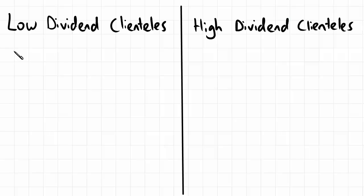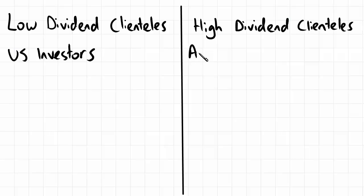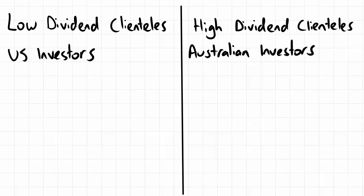On the left side, you would expect to see US investors, because in the US capital gains get preferential tax treatment over ordinary income, which is what dividends get classified as. On the other side, you could see Australian investors, because in Australia we have dividend imputation, which actually reduces the tax on dividends and makes them preferable to capital gains.